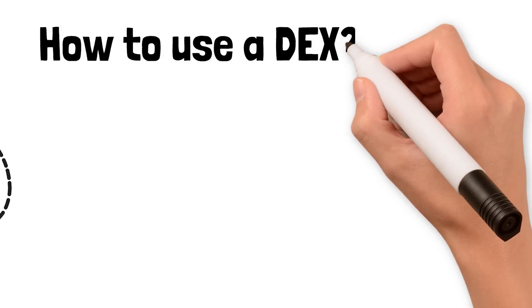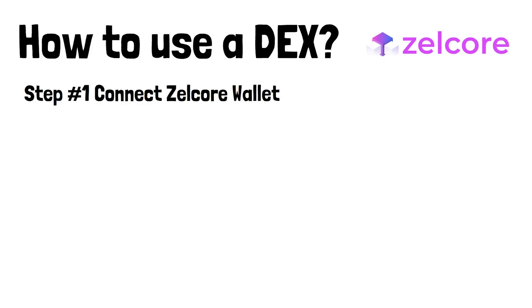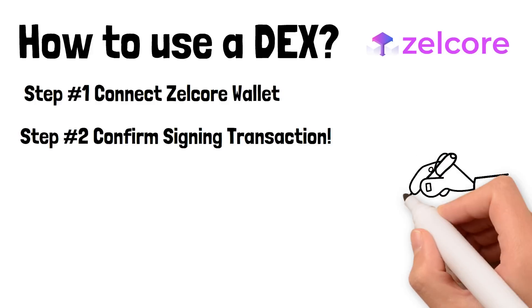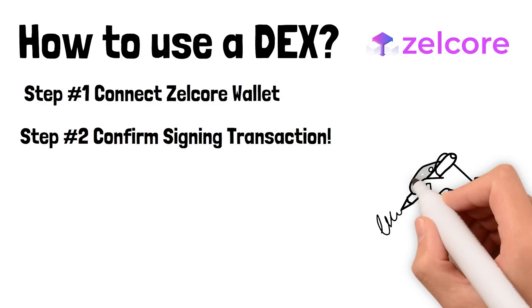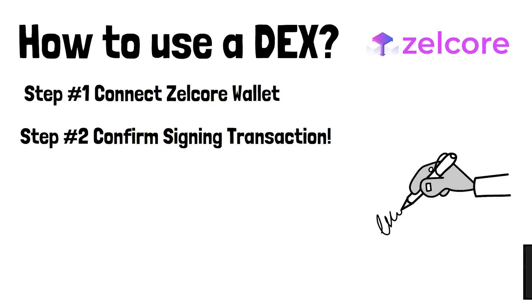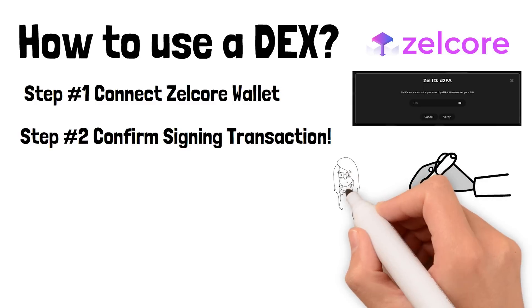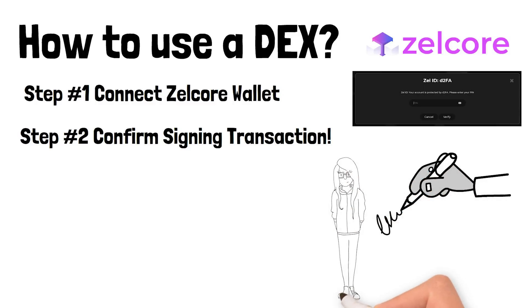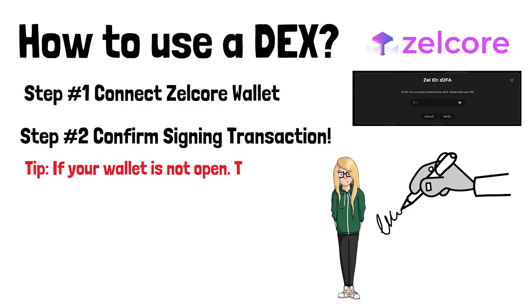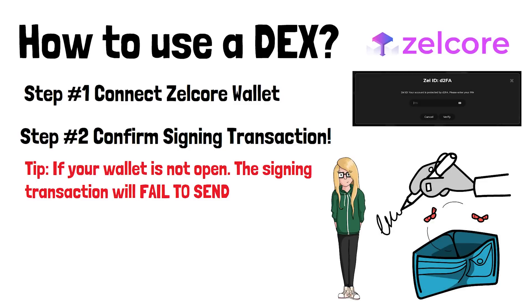Anytime you want to interact with a decentralized exchange like KadeX, the first thing you need to do is connect your crypto wallet — my personal favorite is Zelcore. When you first connect your wallet to the DEX, the DEX needs to verify you are the owner of that wallet. It creates what is called a signing transaction, which is just like an email verification code, but sent to your crypto wallet instead. The only way to view or respond to this message is if you're already signed into your wallet.